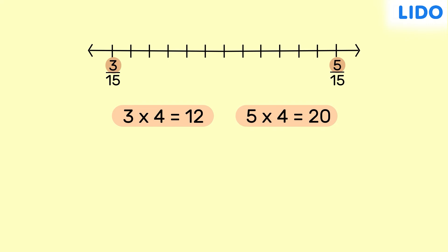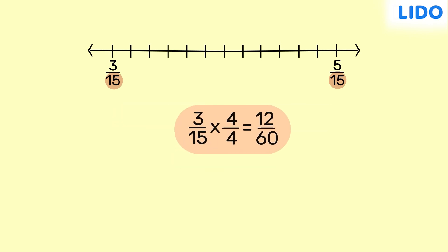Now, the difference between 12 and 20 is 8. So, we can easily find 3 integers between them. But, because we are multiplying the numerators of both the rational numbers by 4, we should also multiply the denominators by 4 to make them equivalent. So, 3 by 15 becomes 12 by 60 and 5 by 15 becomes 20 by 60.